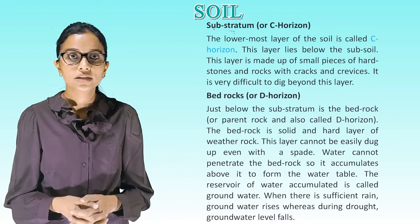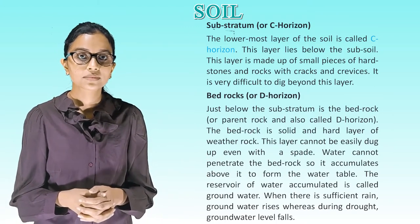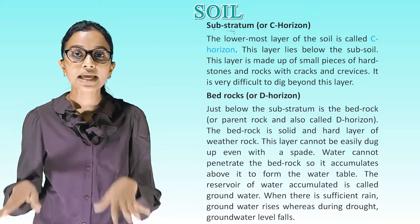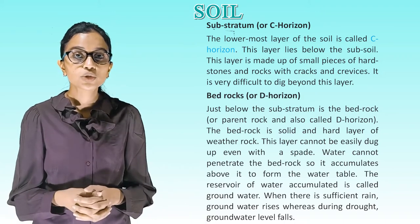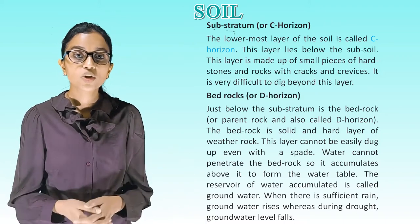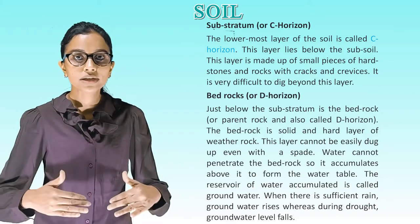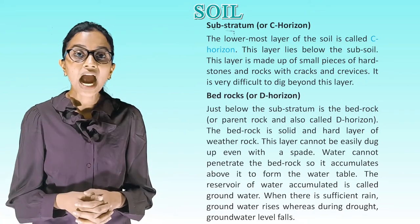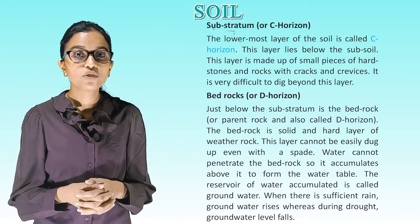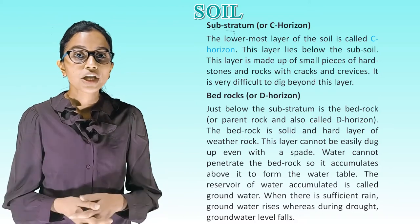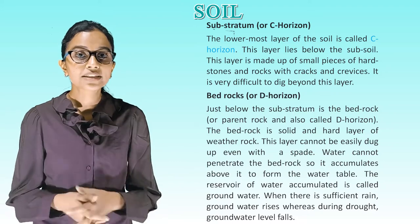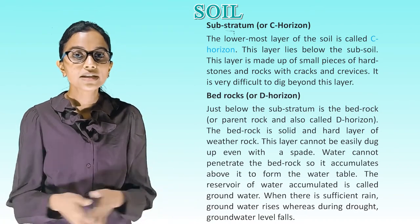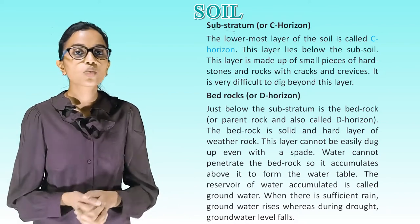Substratum or C horizon: The lowermost layer of the soil is called C horizon. This layer lies below the subsoil and is made up of small pieces of hard stones and rocks with cracks and crevices. It is very difficult to dig beyond this layer. Bedrock or D horizon: Just below the substratum is the bedrock, also called D horizon. The bedrock is a solid, hard layer. Water cannot penetrate the bedrock, so it accumulates above it to form the water table. The reservoir of water accumulated is called groundwater. When there is sufficient rain, groundwater rises, whereas during drought, groundwater level falls.